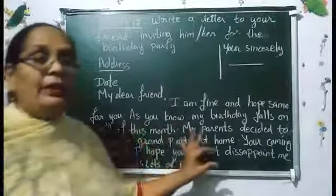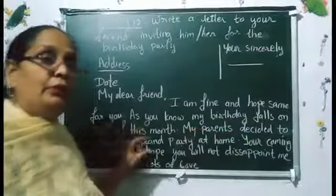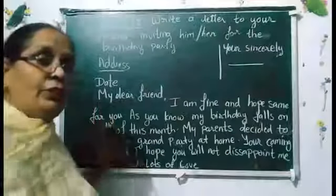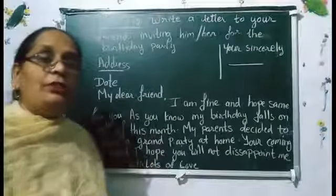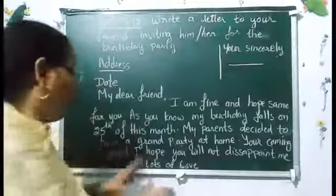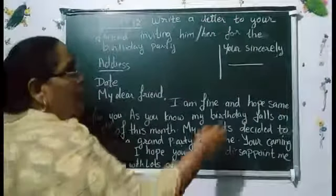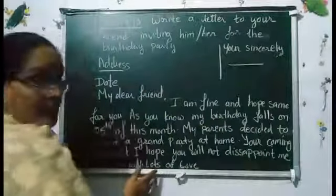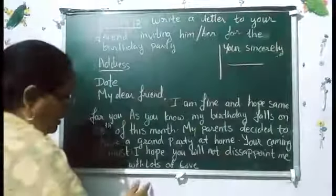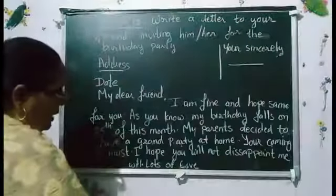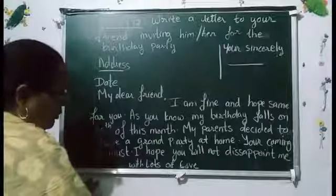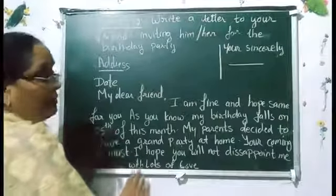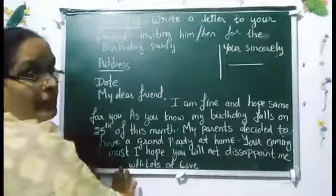You can add: How are uncle and auntie? Bring uncle and auntie with you. Add as many sentences as you like, but the sentence structure must be correct. End with 'Yours sincerely' and your name. This is Activity 12.